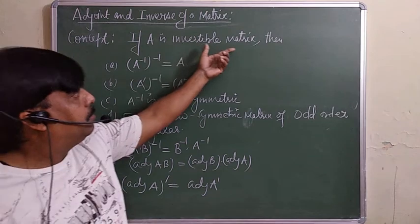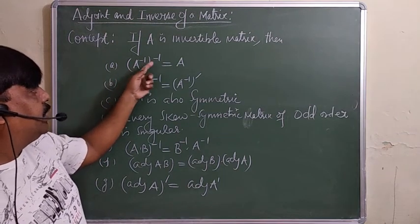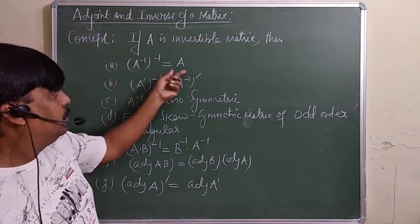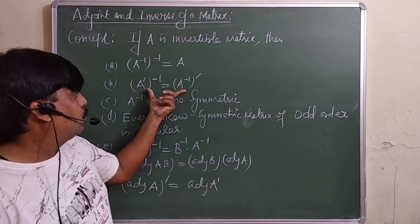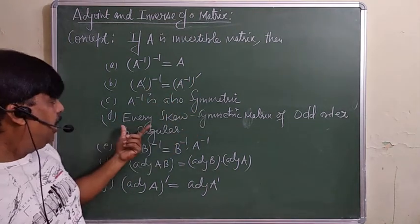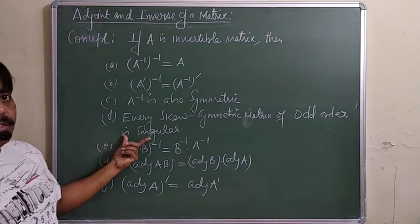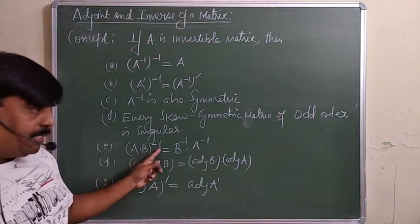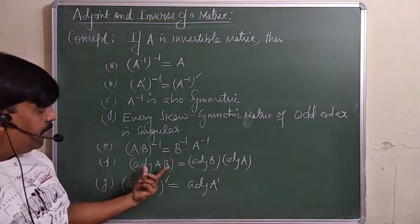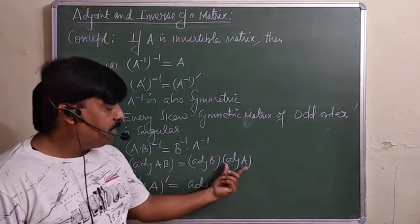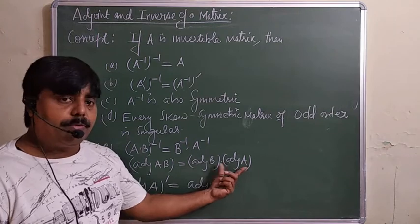A few more concepts for invertible matrices: (A⁻¹)⁻¹ = A — taking the inverse of the inverse gives the matrix itself. Also, (Aᵀ)⁻¹ = (A⁻¹)ᵀ — transpose then inverse equals inverse then transpose. A⁻¹ is also symmetric if A is symmetric. Every skew-symmetric matrix of odd order is singular. For a product: (AB)⁻¹ = B⁻¹·A⁻¹, and similarly adj(AB) = adj(B)·adj(A).